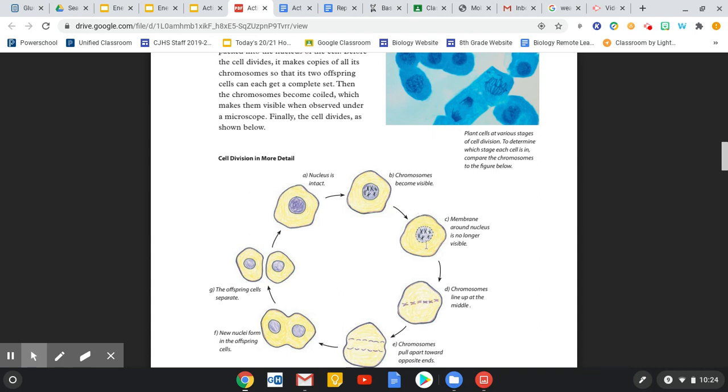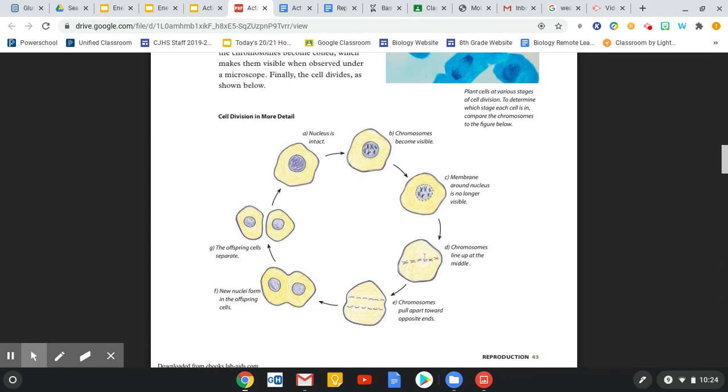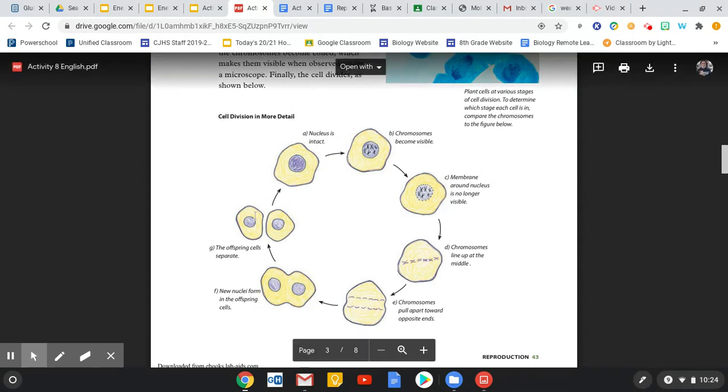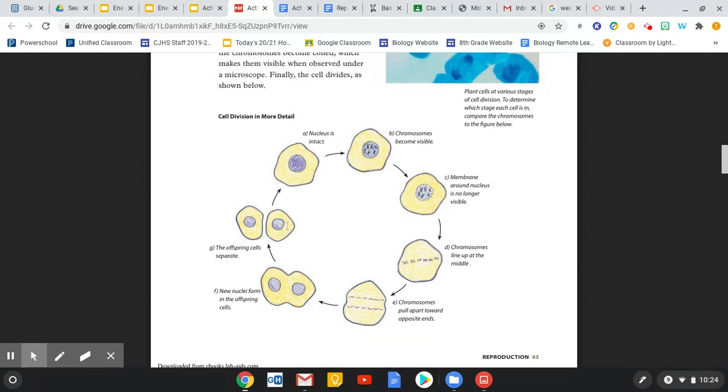Then the membrane starts to go away. The chromosomes line up. They start to split to opposite sides. And each one of the new cells is left with an exact copy of the one before. This is mitosis, cell division known as mitosis.